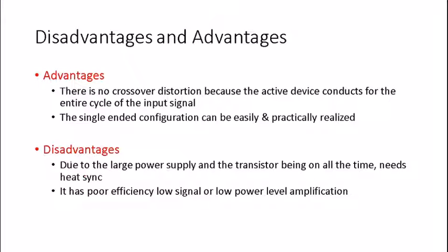The final disadvantage is poor efficiency, as demonstrated by the 25% maximum — this constrains Class A power amplifiers to only amplifying low-power signals. This is the end of this video, thank you.